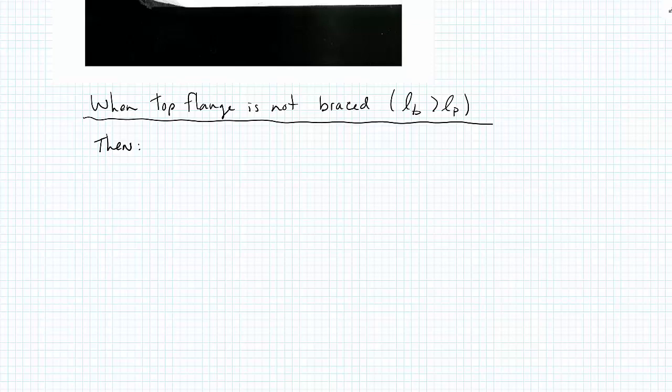When the top flange is not braced, or that is to say, the distance between brace points, LB, is less than this LP, which we find in table 3-2, then we have a condition when the nominal moment strength, MN, is less than this value, MP, shown in the table. Effectively, what we're saying is, if we're unbraced, we lose strength.